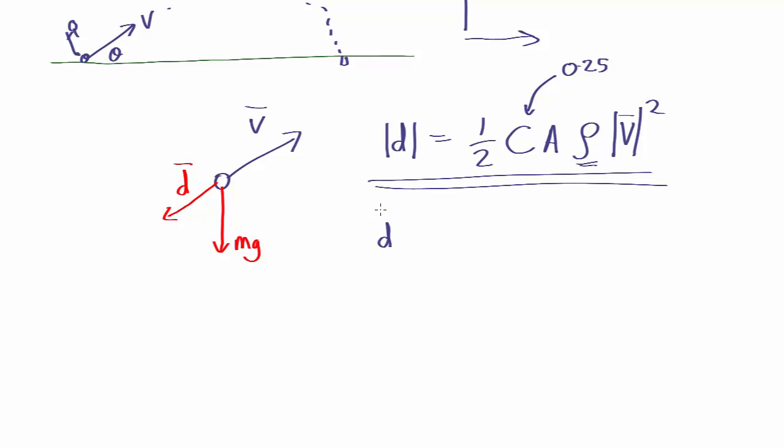So the drag vector is going to have an amplitude of half c a rho mod v squared. In which direction is it going? It's going in the direction of minus the velocity. So I'm going to put the unit vector in that direction, so it's a vector of length one there.